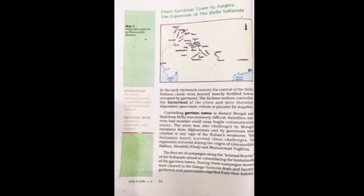Part 2: From Garrison Town to Empire — the expansion of the Delhi Sultanate. In the early 13th century, there was no significant expansion of Delhi beyond heavily fortified towns occupied by garrisons. The Sultans seldom controlled the hinterland of the cities and were dependent upon trade, tribute, or plunder for supplies. Hinterland refers to the lands adjacent to a city or port that supply it with goods and services.